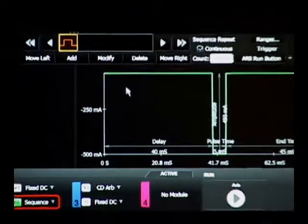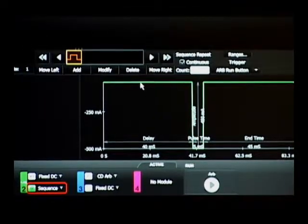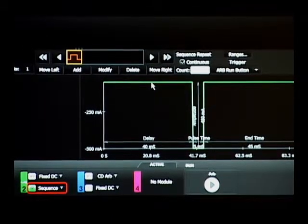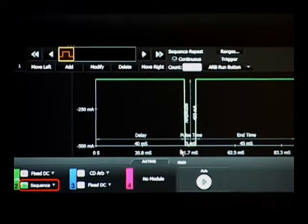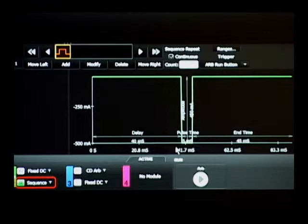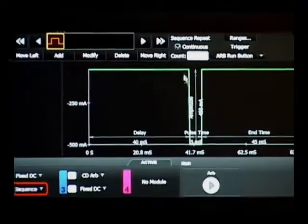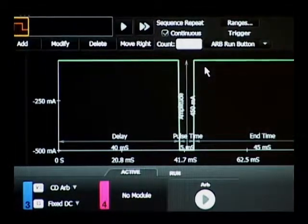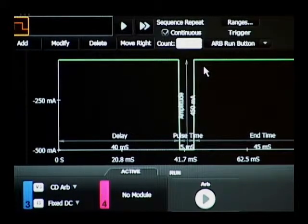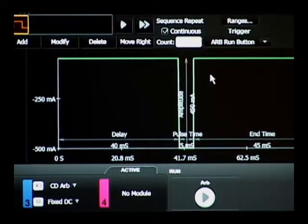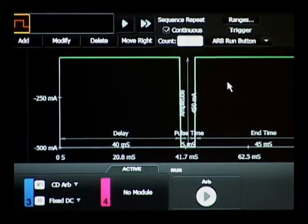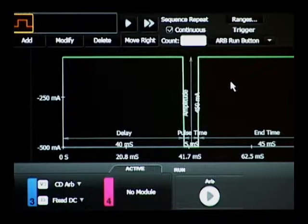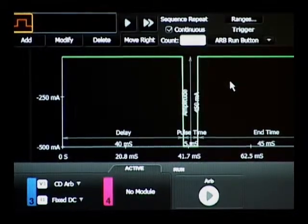So here is our pulsed ARB waveform. It starts out at minus 50 milliamps, that's our DC quiescent bias condition. We're pulsing down to minus 500 milliamps, that's our full load condition. Then we go back to our quiescent state again. I'm pulsing a very short duration, it's a 5% duty cycle in order to minimize the heating effect on our device under test. So now we're done setting up our load conditions.